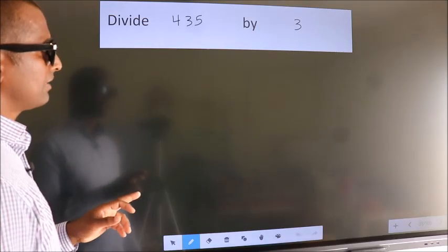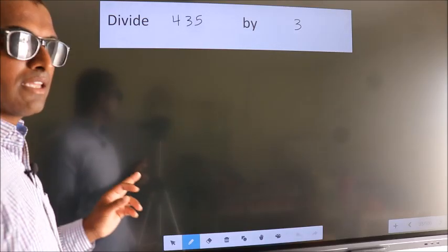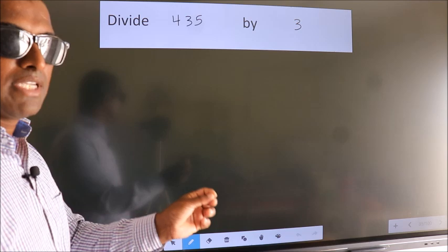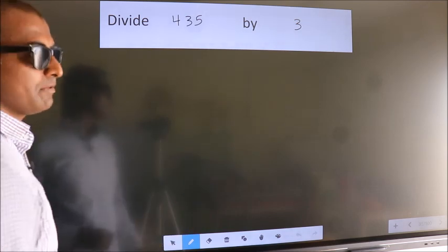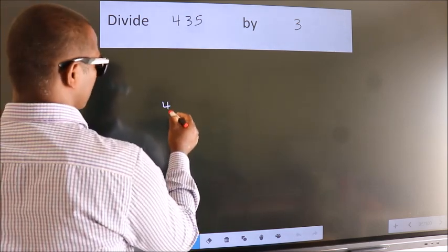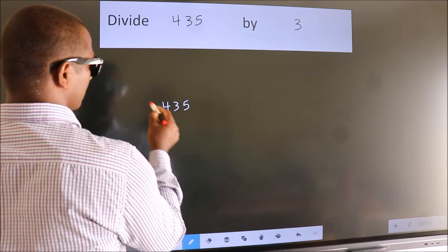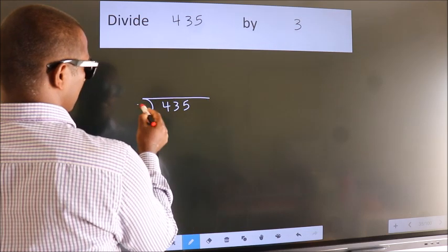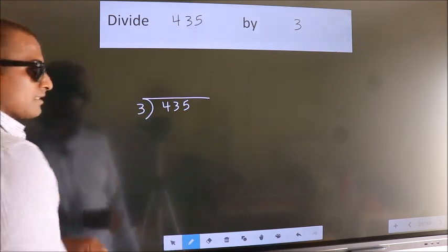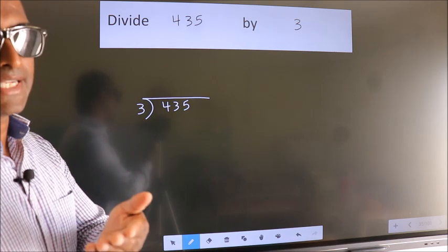Divide 435 by 3. To do this division, we should frame it in this way. 435 here, 3 here. This is your step 1. Next.